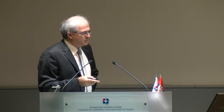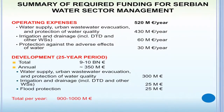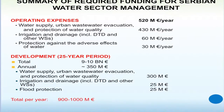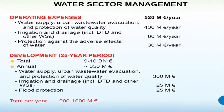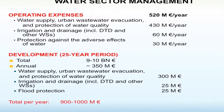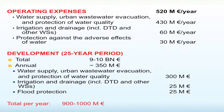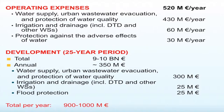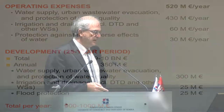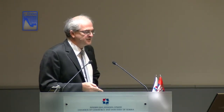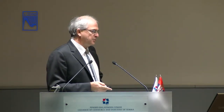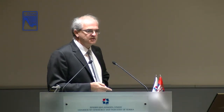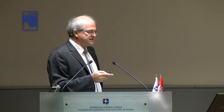In total, operating expenses for the existing system are about 500 million euros annually. When we add development needs for the next 25-year period, it comes to 9 to 10 billion euros to invest — both for our own needs and to align with EU directives. We need about 350 million euros in investment annually, giving a total need of 1 billion euros annually. Currently we have only 350 million in the water sector, so the discrepancy between needs and available funding is very large — one of the main problems we must solve.